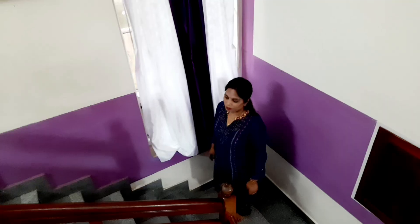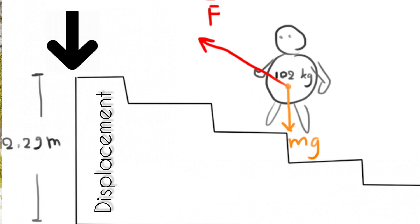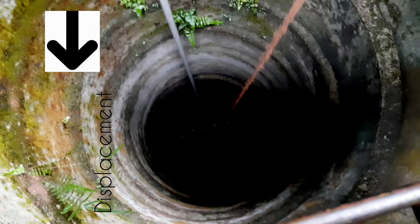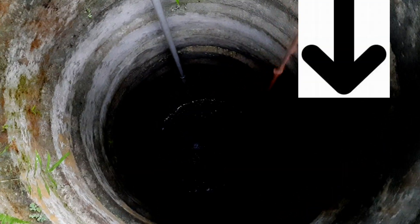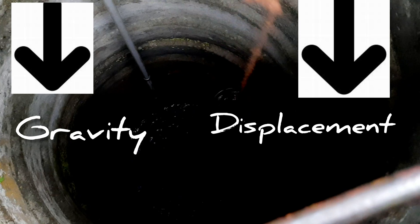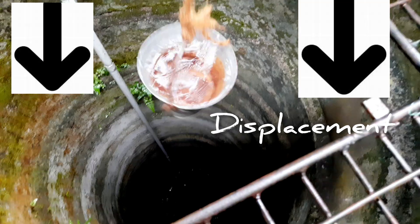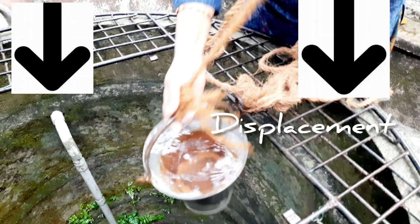Now we'll see in each case when there was work done and when there was no work done. In the case of going up steps and lifting water from a well, there was work done because there is displacement in the direction of force applied, and the angle between displacement and force is zero degrees. As per the formula W = F·s·cosθ, here θ is zero, so cosθ equals one, and the final work done will be a nonzero value.